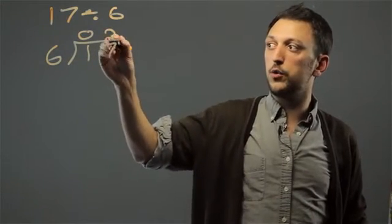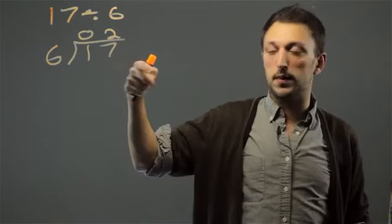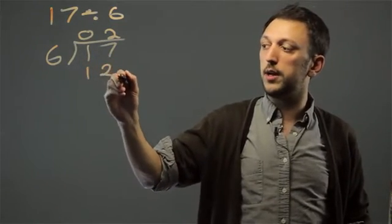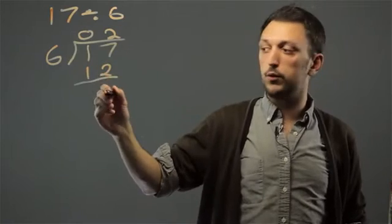6 goes into 17 twice, because 12, but then the next multiple of 6 would be 18, which is too big. So we write 12 down here. 17 minus 12 is 5.